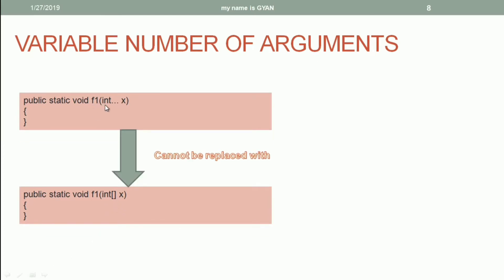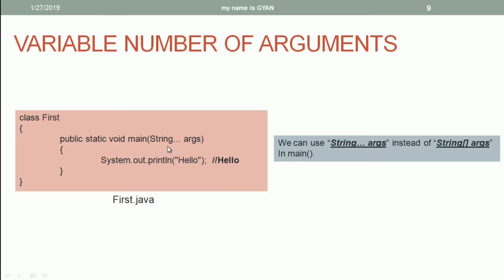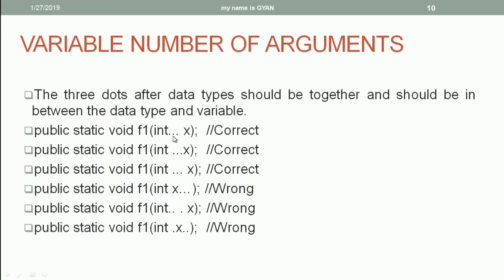We can use a variable number of arguments in place of an array argument, but we cannot use an array argument in place of a variable number of arguments. Since varargs can replace an array argument, in the method main we can use a variable number of arguments of type String instead of a String array — and that is perfectly valid. The three dots represent variable number of arguments; we cannot use two dots or four dots. The three dots after the data type should be together, between the data type and the variable name, without any space. So 'int...x' is correct, but placing the dots after the variable or with spaces is not correct.